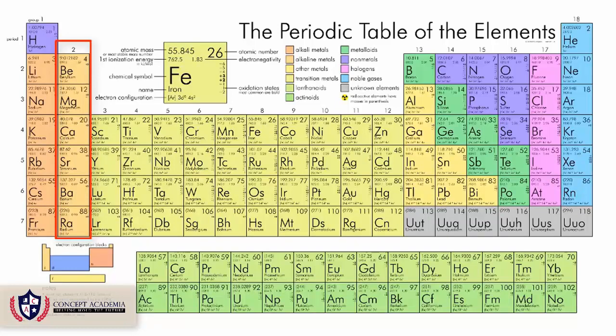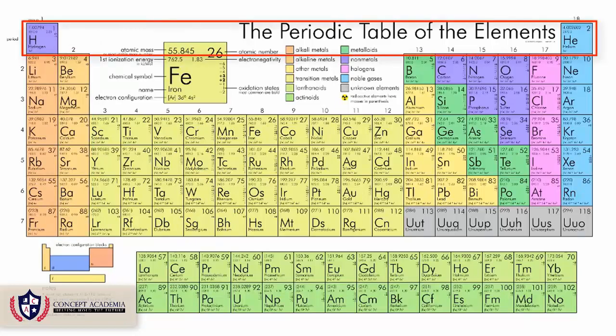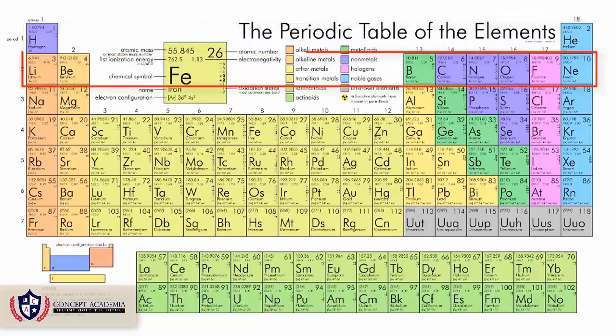The period number tells us the number of shells in the atom. This is period number one, which has two elements: hydrogen and helium — so there is only one shell in hydrogen and helium. This is period number two, covering lithium to neon. All elements in period two have two shells in their atom.